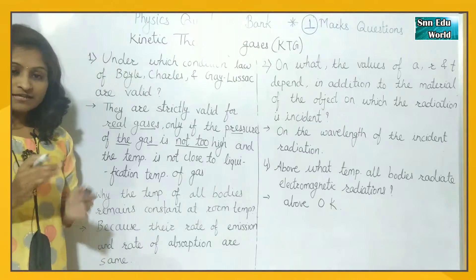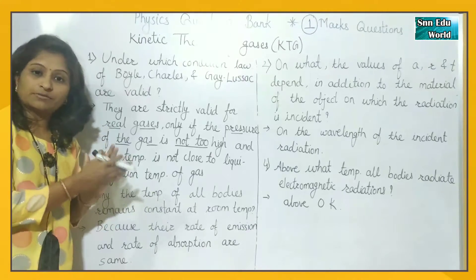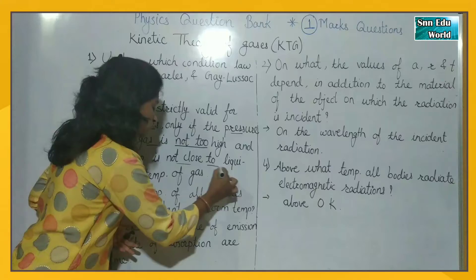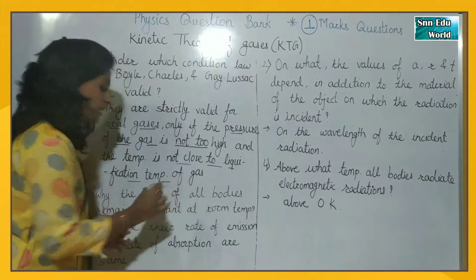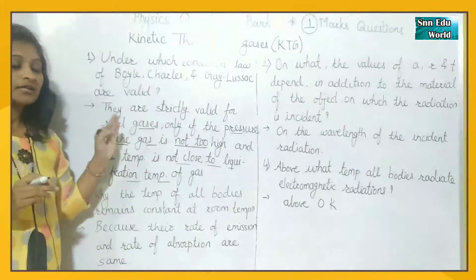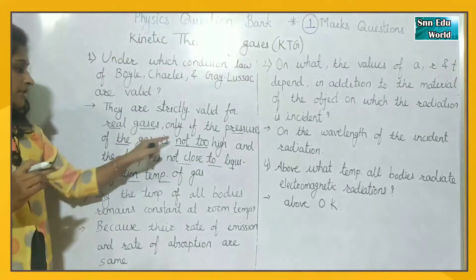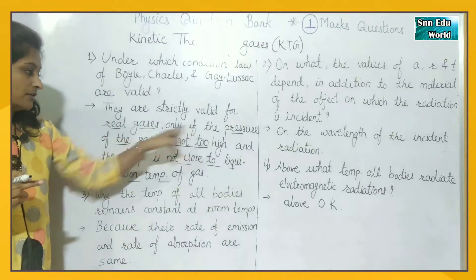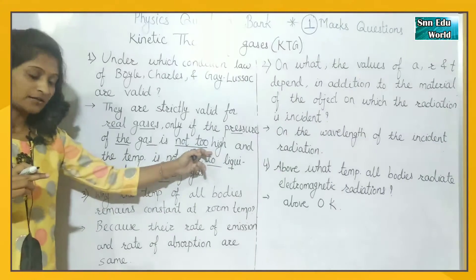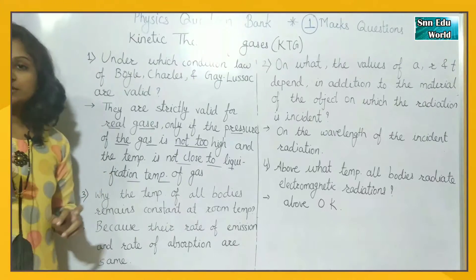And the temperature is not close to liquification temperature of the gas. Which temperature is converted into liquid, should not have that temperature. So that is the third condition, not to be close to liquification temperature of gases. So these are the three conditions: they must be real gases, pressure of the gas is not too high, and the temperature is not close to liquification temperature of gas.